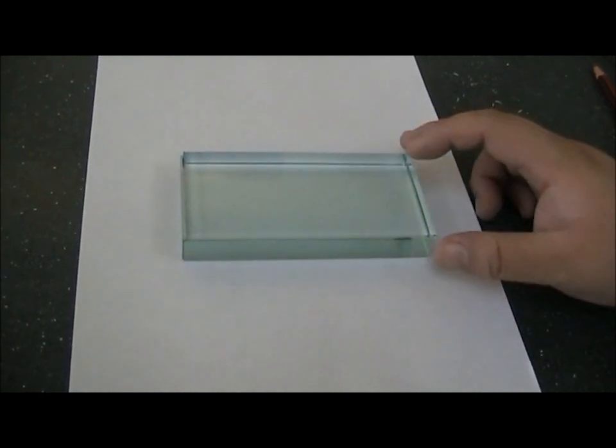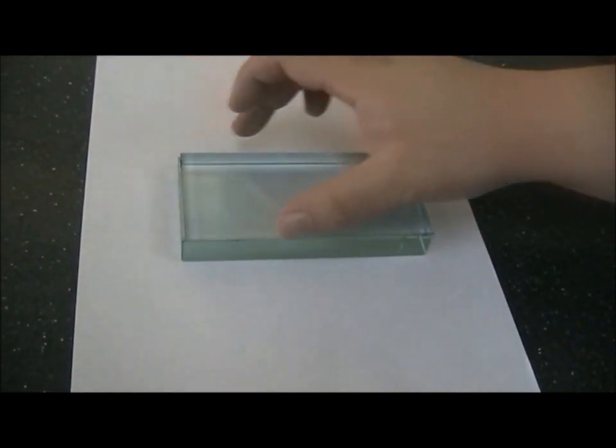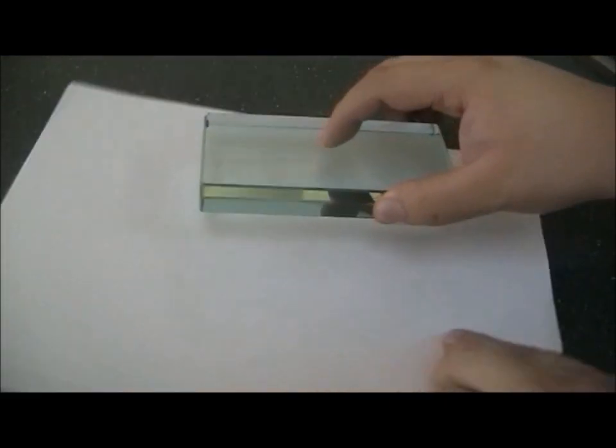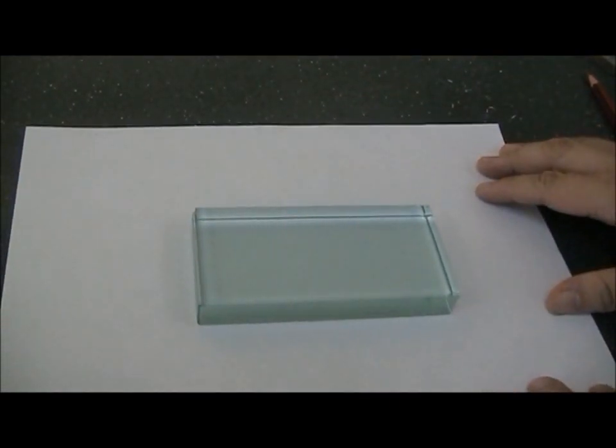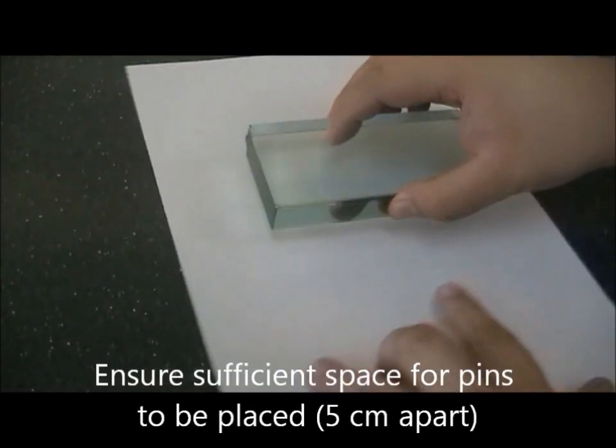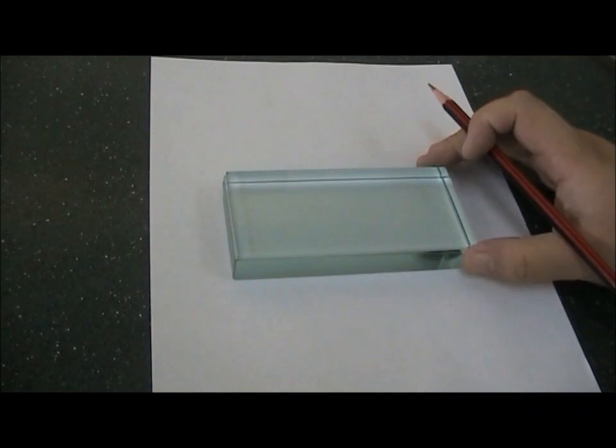In this question, the experiment requires us to draw the outline of the glass block. It can be done in portrait or landscape. Whichever, please ensure that there is sufficient space for the pins to be placed at least 5cm apart.